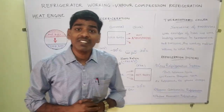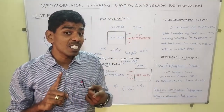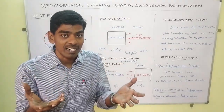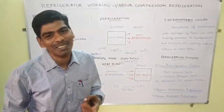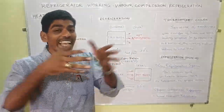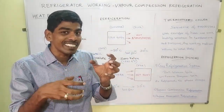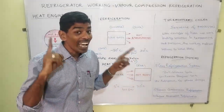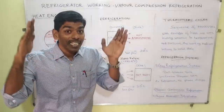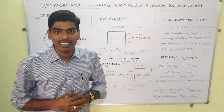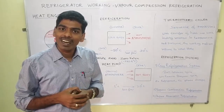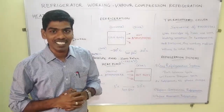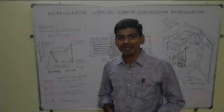Let us look at some refrigeration systems. The gas refrigeration system runs on the reverse Brayton cycle, also called the Bell-Colman cycle. Here the refrigerant used is air, so it is also termed an air refrigeration system, where the air is compressed and then expands using heat exchangers. This system is used in gas turbine powered aircraft, where compressed air is used for refrigeration. However, in domestic or industrial applications we generally do not use this system.